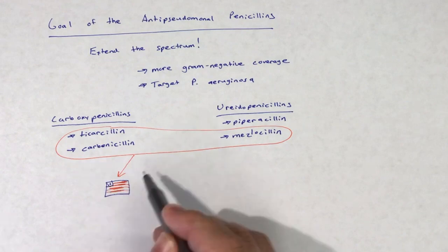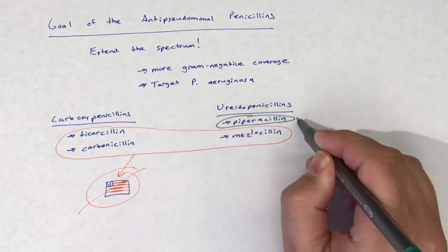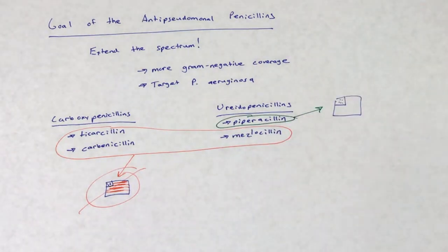Carbenicillin, ticarcillin, and mezlocillin have been discontinued in the U.S. Piperacillin is the only drug in this class that is used clinically in the United States.